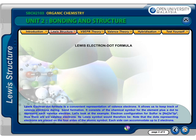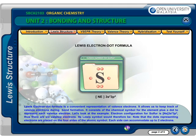For example, the electron configuration for sulfur is [Ne] 3s² 3p⁴. Thus, there are 6 valence electrons. Its Lewis symbol would show that the dots representing electrons are placed on four sides of the atomic symbol, and each side can accommodate up to two electrons.